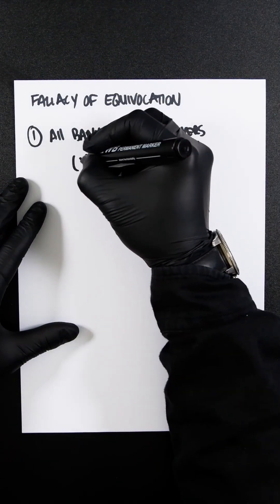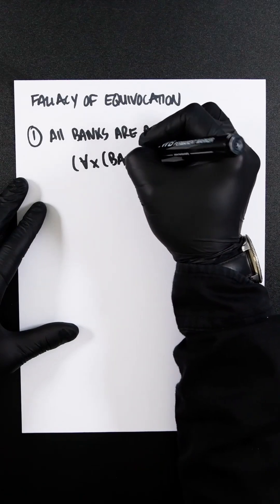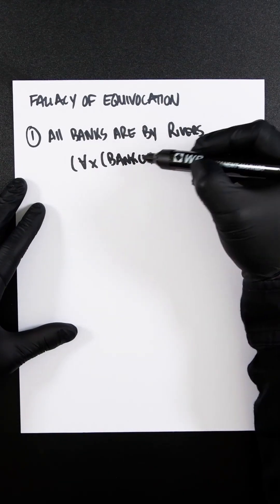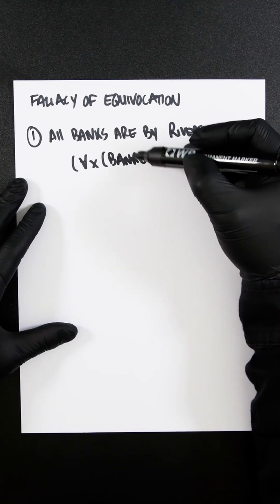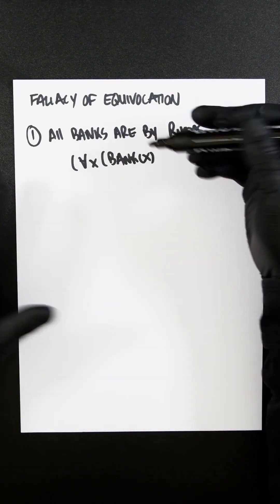So we would have for all x, bank x. In predicate logic, this means x is a bank, and this is for all values of x, for all things that are x.